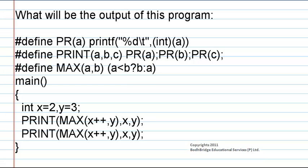This is a ternary operator. It means if a is less than b then b is the answer, or else a is the answer. In the main function, the variables x and y are declared as integers and assigned values 2 and 3. In the next statement the macro print is called, and in its arguments the max macro is called. The same statement is executed again. Now we have to find the output of this program.